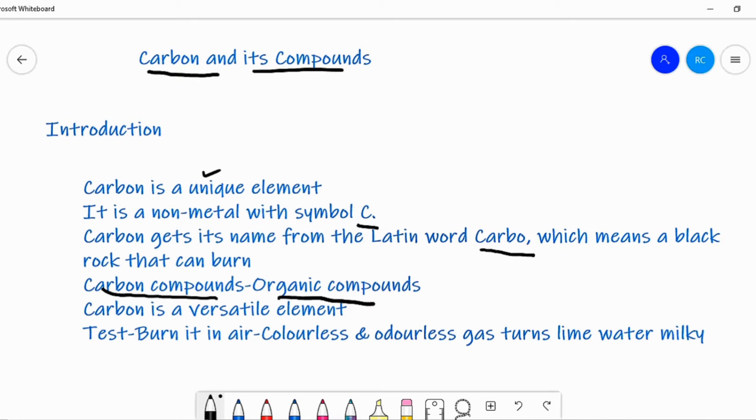Most of the medicines like antibiotics, sulfa drugs, analgesics, antipyretics, etc. which we use to protect ourselves from diseases and ailments are again made up of carbon compounds.